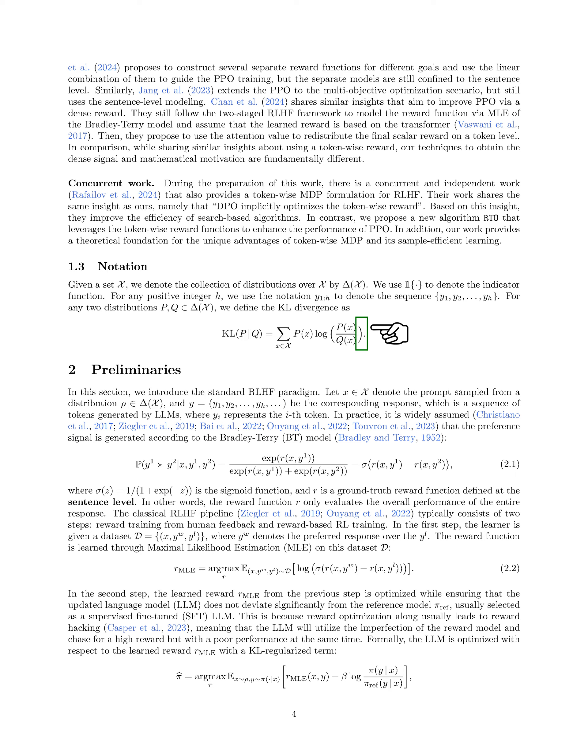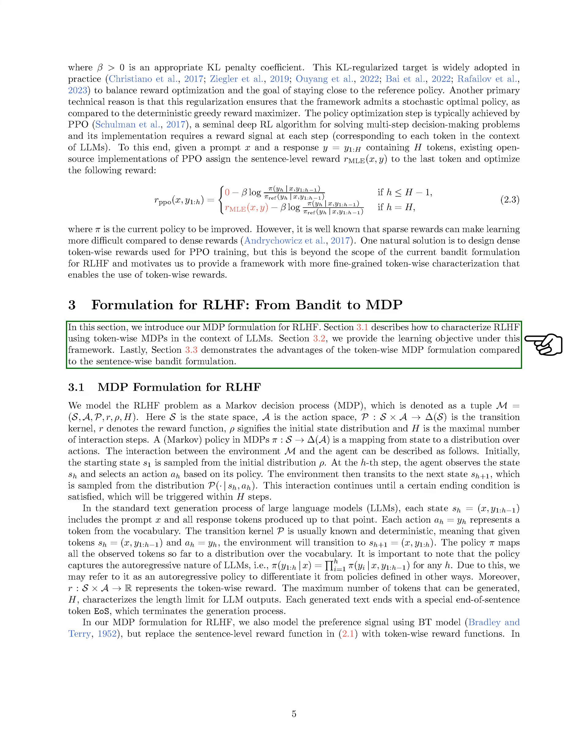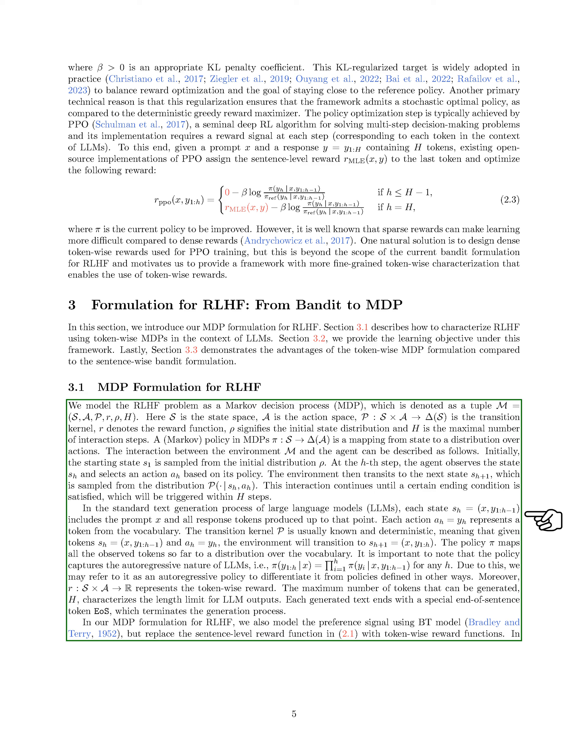In this section, we present our Markov Decision Process, MDP, formulation for Reinforcement Learning from Human Feedback, RLHF. We explain how RLHF can be represented using token-wise MDPs within large language models, LLMs. We define the RLHF problem as an MDP denoted by a tuple M = (S, A, P, R, ρ, H), where S represents the state space, A is the action space, P is the transition kernel, R is the reward function, ρ is the initial state distribution, and H is the maximum number of interaction steps.